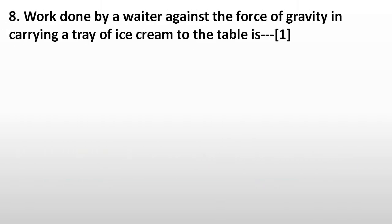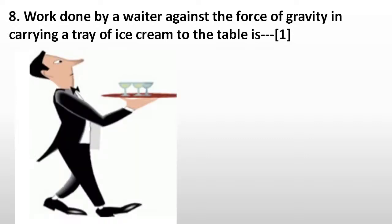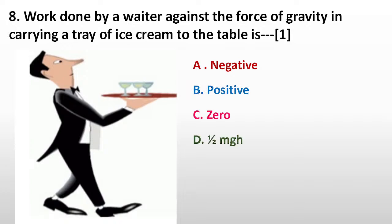Question number eight. Work done by a waiter against the force of gravity in carrying a tray of ice cream to the table is dash. Options: A, negative; B, positive; C, zero; D, half mgh. The answer to this question is C, zero.